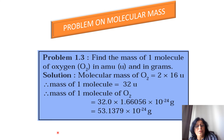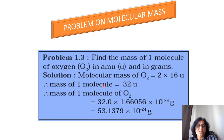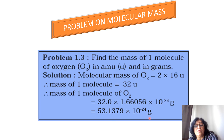In this problem, find the mass of one molecule of oxygen in AMU and in grams. The molecular mass of oxygen (O₂) is 2 × 16 = 32 U. Therefore, the mass of one molecule of oxygen in grams is 32 × 1.66056 × 10⁻²⁴ grams, which comes out to be 53.1379 × 10⁻²⁴ grams.